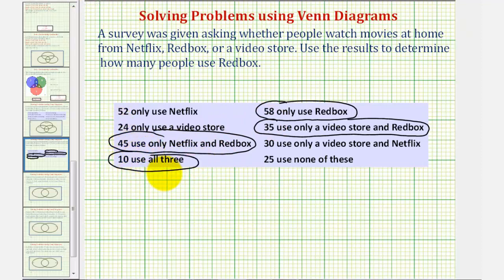The sum of all these users would be the number of Redbox users. So we'd have 58 plus 35 plus 45 plus 10 Redbox users. This comes out to 148.